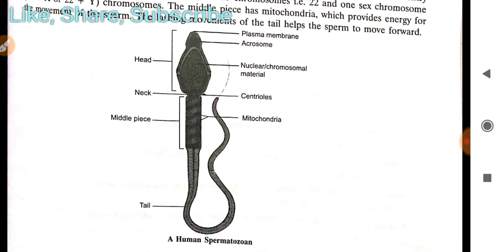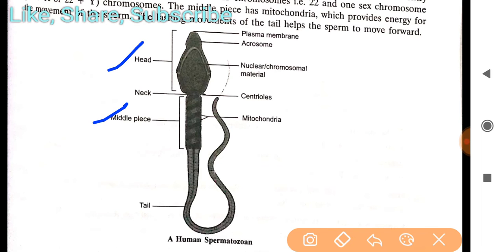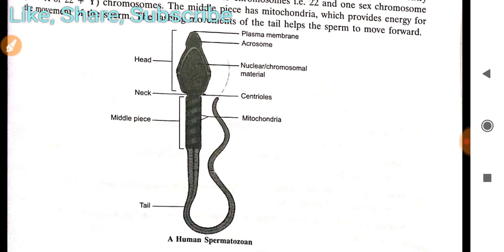So the human spermatozoon has different parts: head, middle piece, and tail. Centrioles are also found here because cell division occurs. The nuclear or chromosomal material — mainly DNA — is present, which is passed from one generation to another.